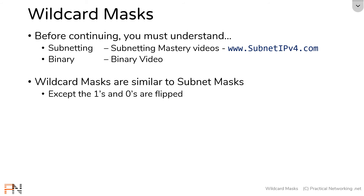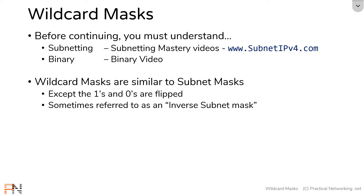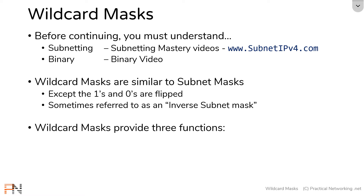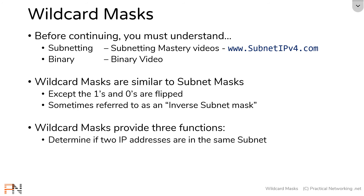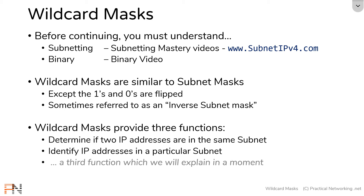So that's a high-level overview of what wildcard masks are — simply a subnet mask with the ones and zeros flipped, sometimes referred to as an inverse subnet mask. Wildcard masks provide three functions. The first is you can use a wildcard mask to determine if two IP addresses are in the same subnet. The second is you can use a wildcard mask to identify the IP addresses in a particular subnet. I want to start by talking through these first two functions.